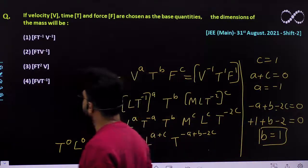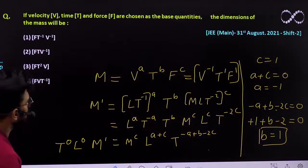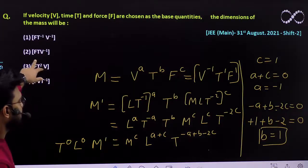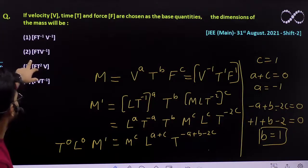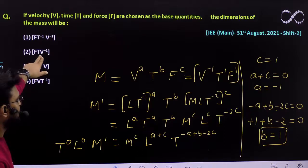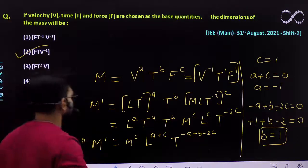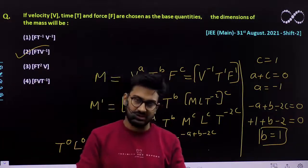So let us see which option is correct. It is v^-1, t^1, and f^1. So f^1, t^1, and v^-1 - second option is the correct option that we are getting.